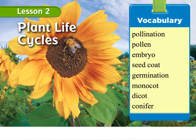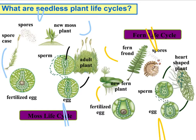Let's talk about the moss life cycle. The moss life cycle begins with asexual reproduction. The moss plant is going to grow a thin brown stalk, and the capsules at the top contain spores. Spores are cells that can develop into new plants without fertilization, which explains the asexual reproduction part.